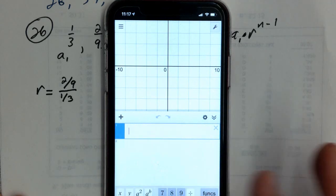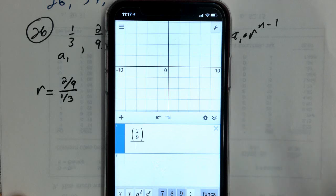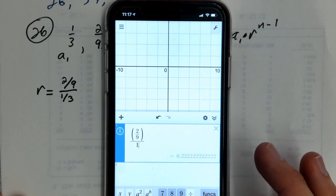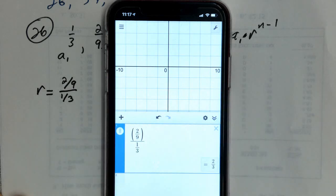So if we take 2 ninths and then we divide that by 1 third, we get 0.6 repeating, which is just 2 thirds. Okay, so r is going to be 2 thirds.